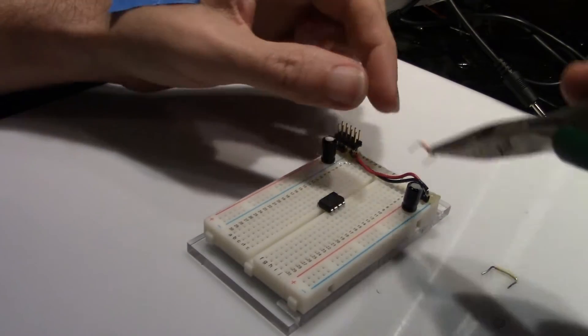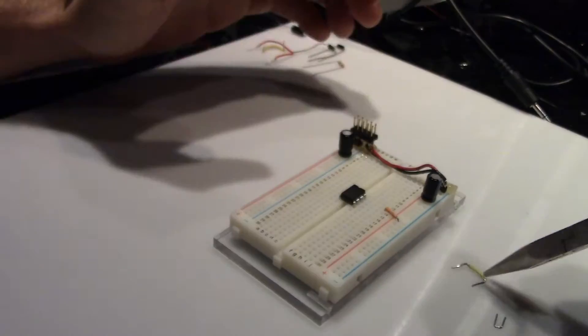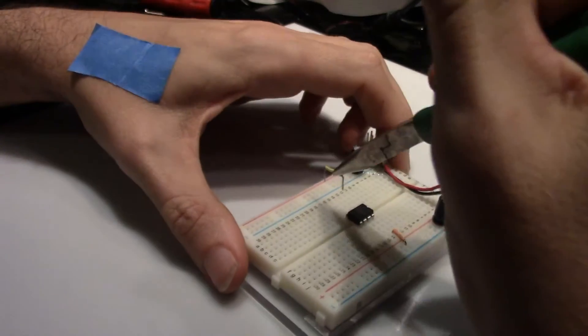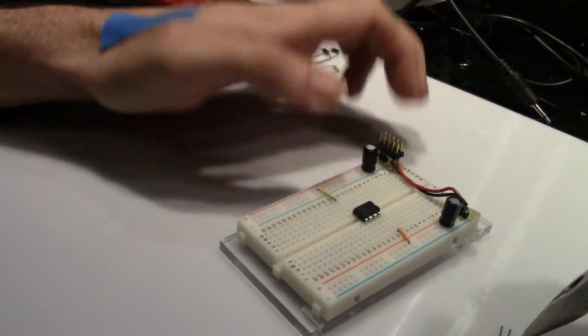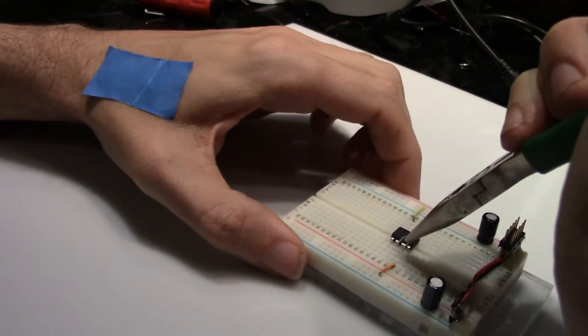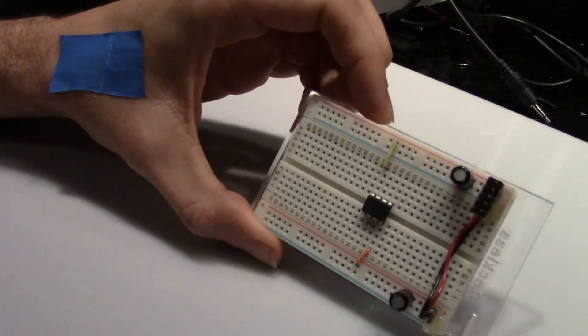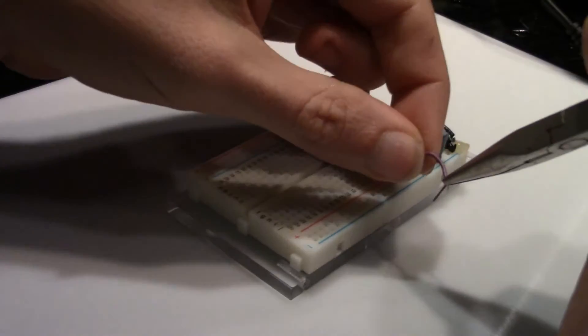Next add the power connections, positive to pin 8, negative to pin 4. Now place a jumper between the output and the negative input on the right op amp. Add a jumper from pin 2 to pin 5.